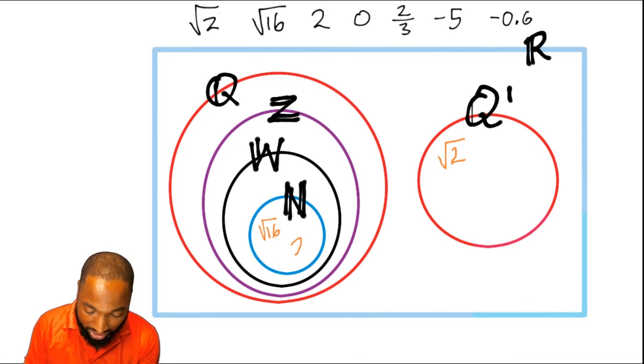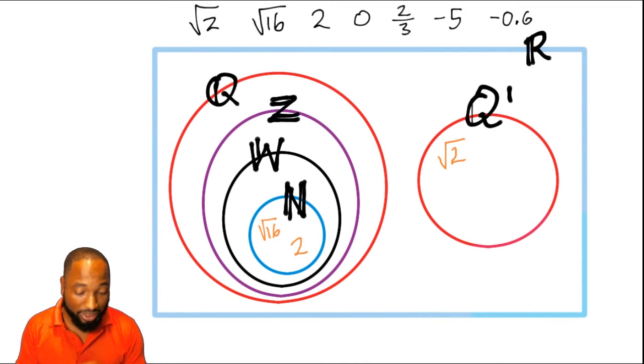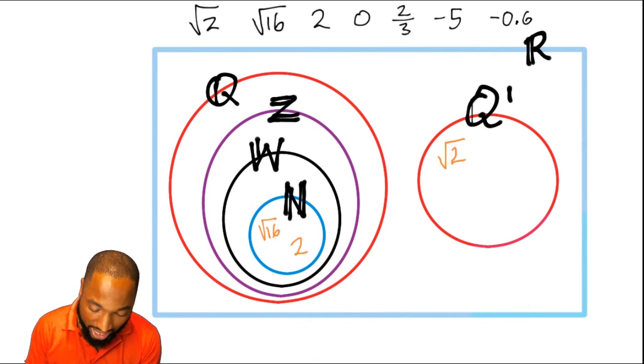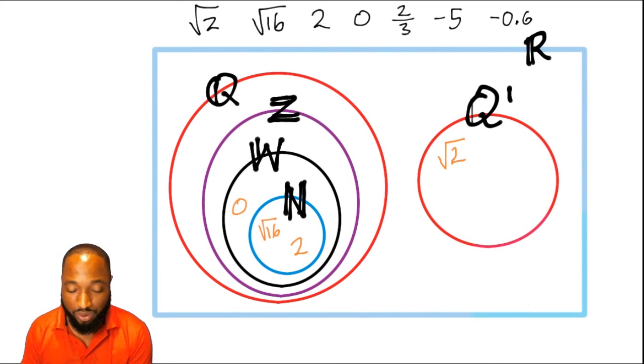2 could also go right here as well because 2 is a natural number, a whole number, it's an integer. 0 can't go inside there because 0 is not a natural number, but it's a whole number. So you can start from the whole number subset.